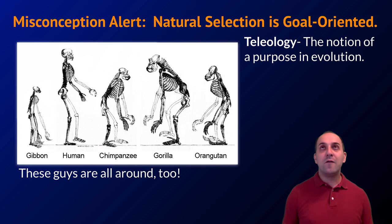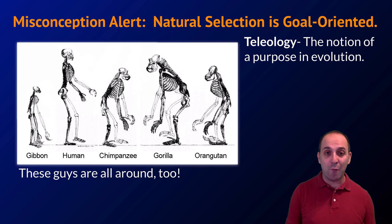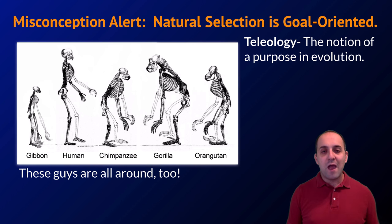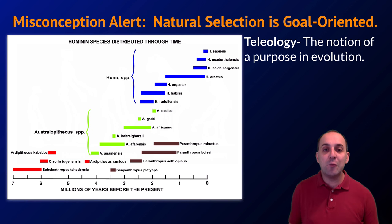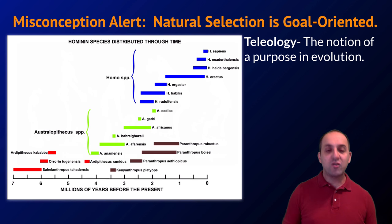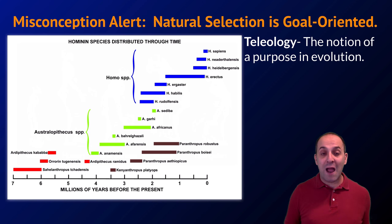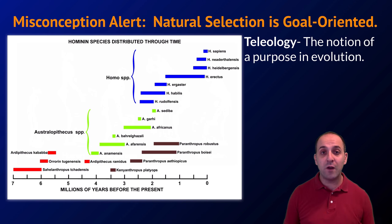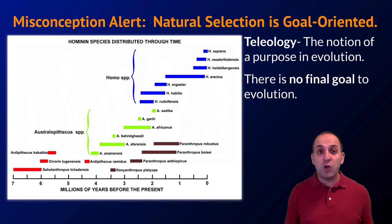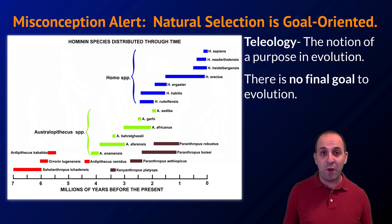To take the apes-to-humans example, there are four different species of great apes that currently share the planet with us. We could just as easily run that diagram through to the modern version of any of those species. For most of the time that humans and their ancestors have been on the planet, there were multiple species of hominids existing at the same time. Just because Homo sapiens is the only hominid species that still survives does not mean there's been a driving force behind evolution to wind up with us as the end result. Humans are still evolving, and there's no reason to think we are the end goal of the evolutionary process.